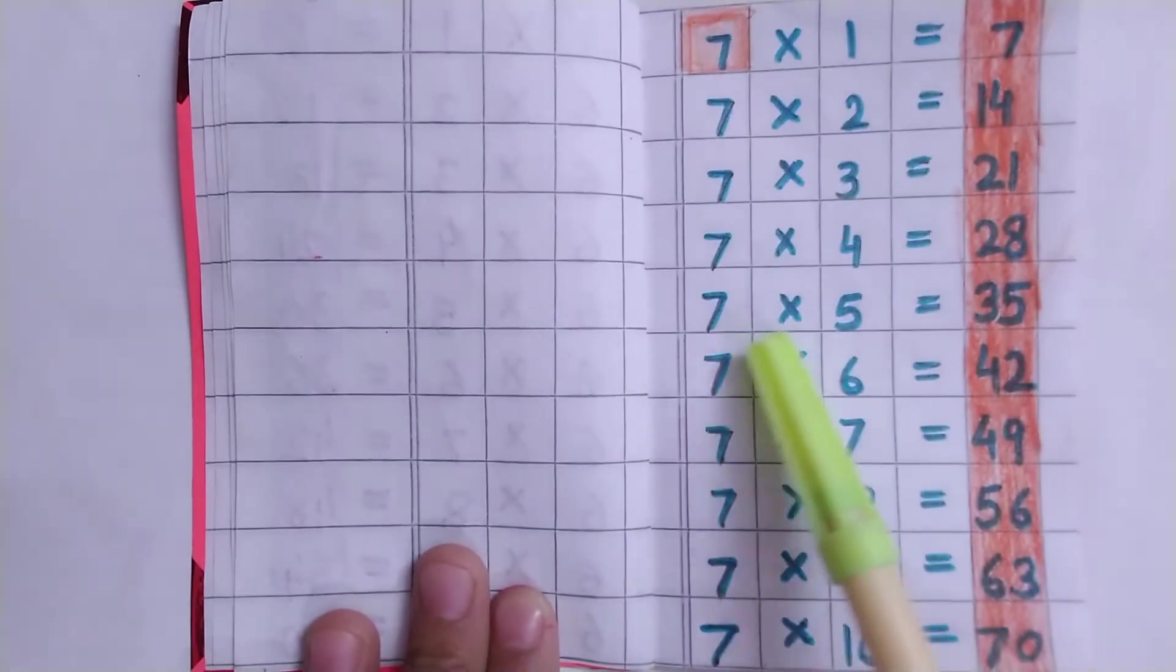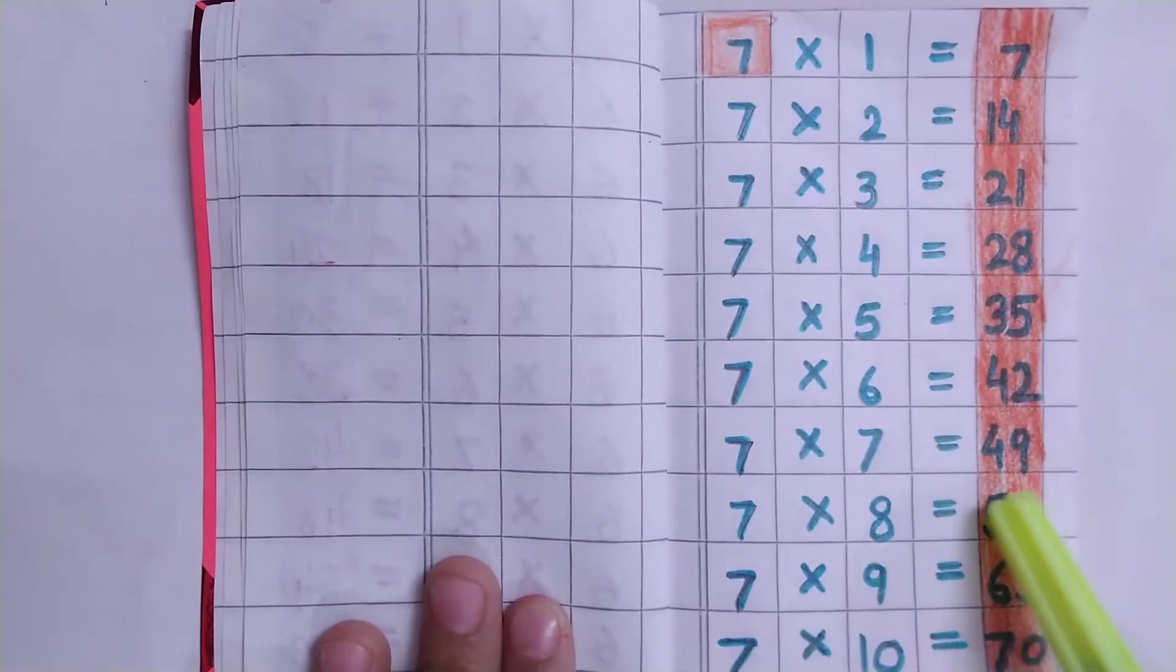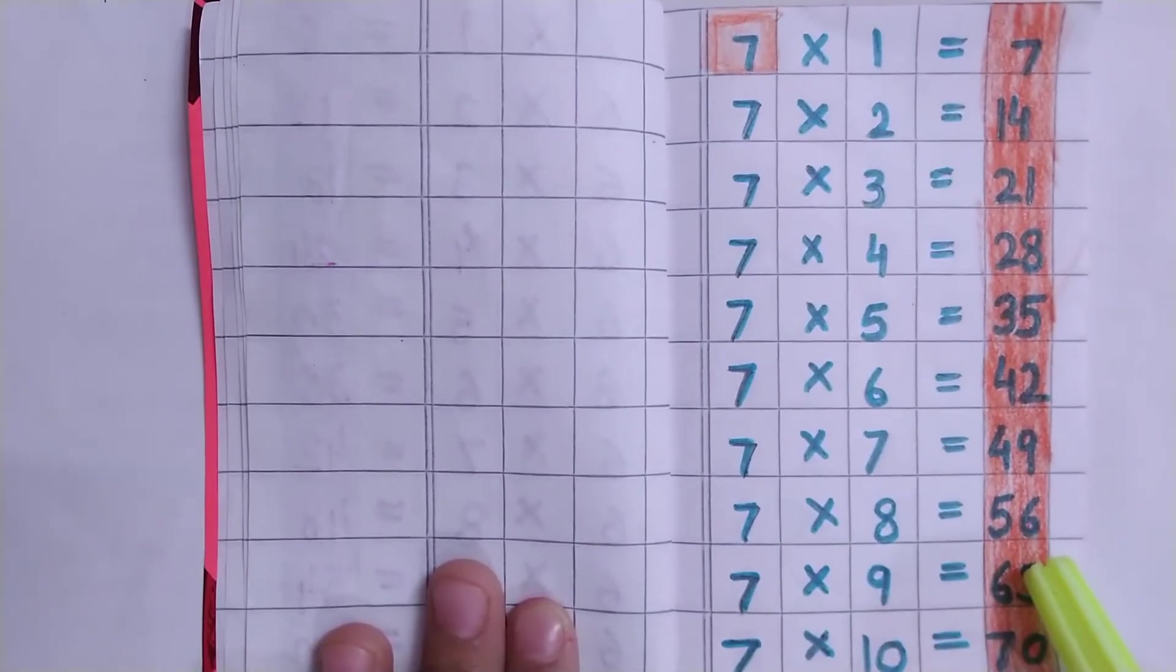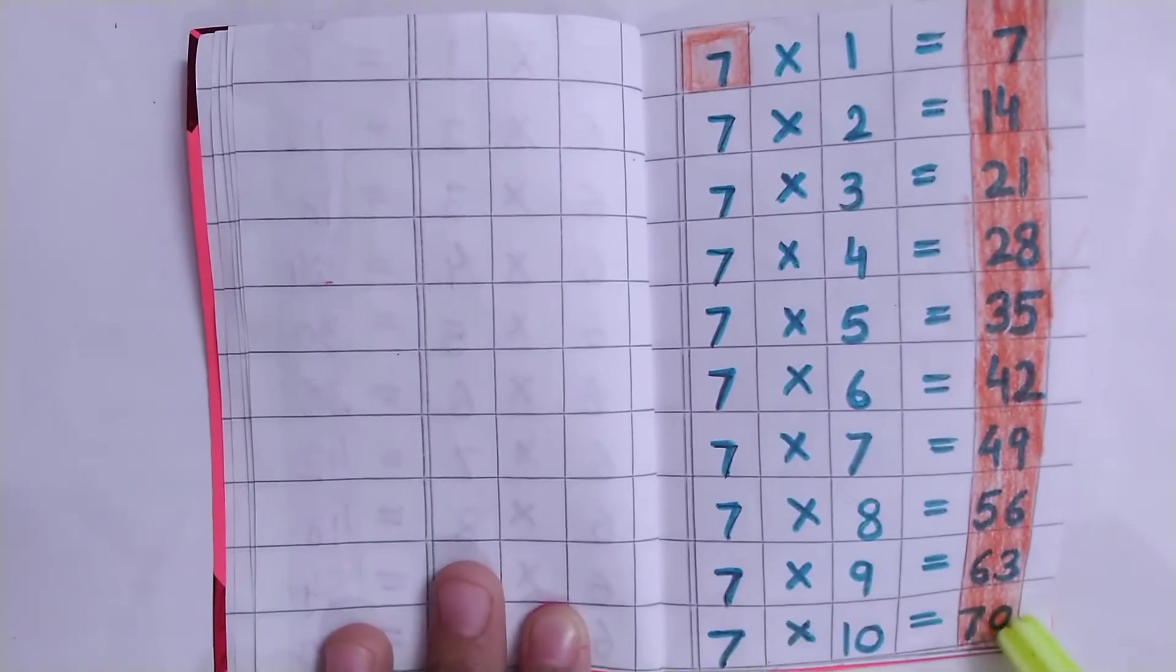Table of 7: 7×4=28, 7×5=35, 7×6=42, 7×7=49, 7×8=56, 7×9=63, 7×10=70.